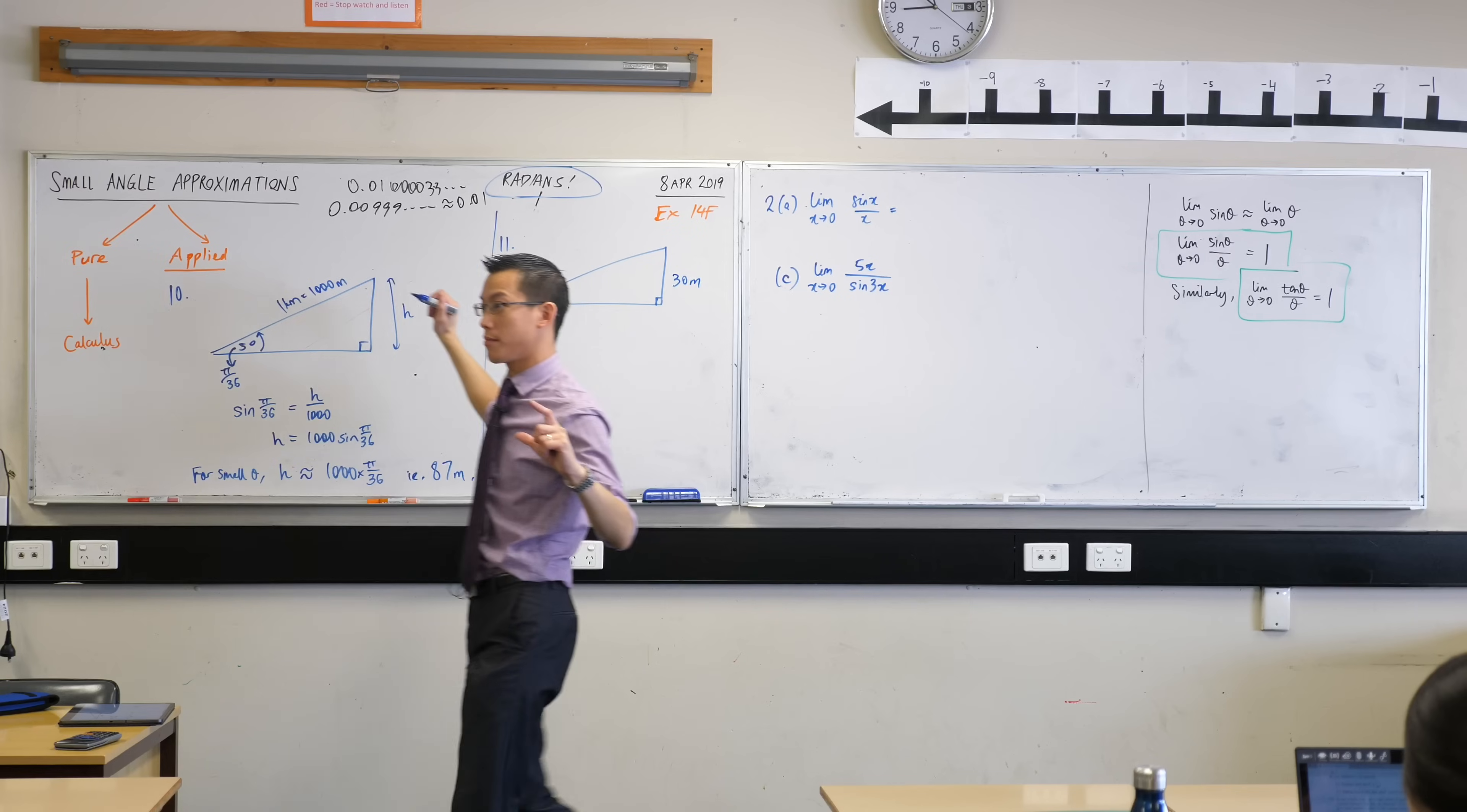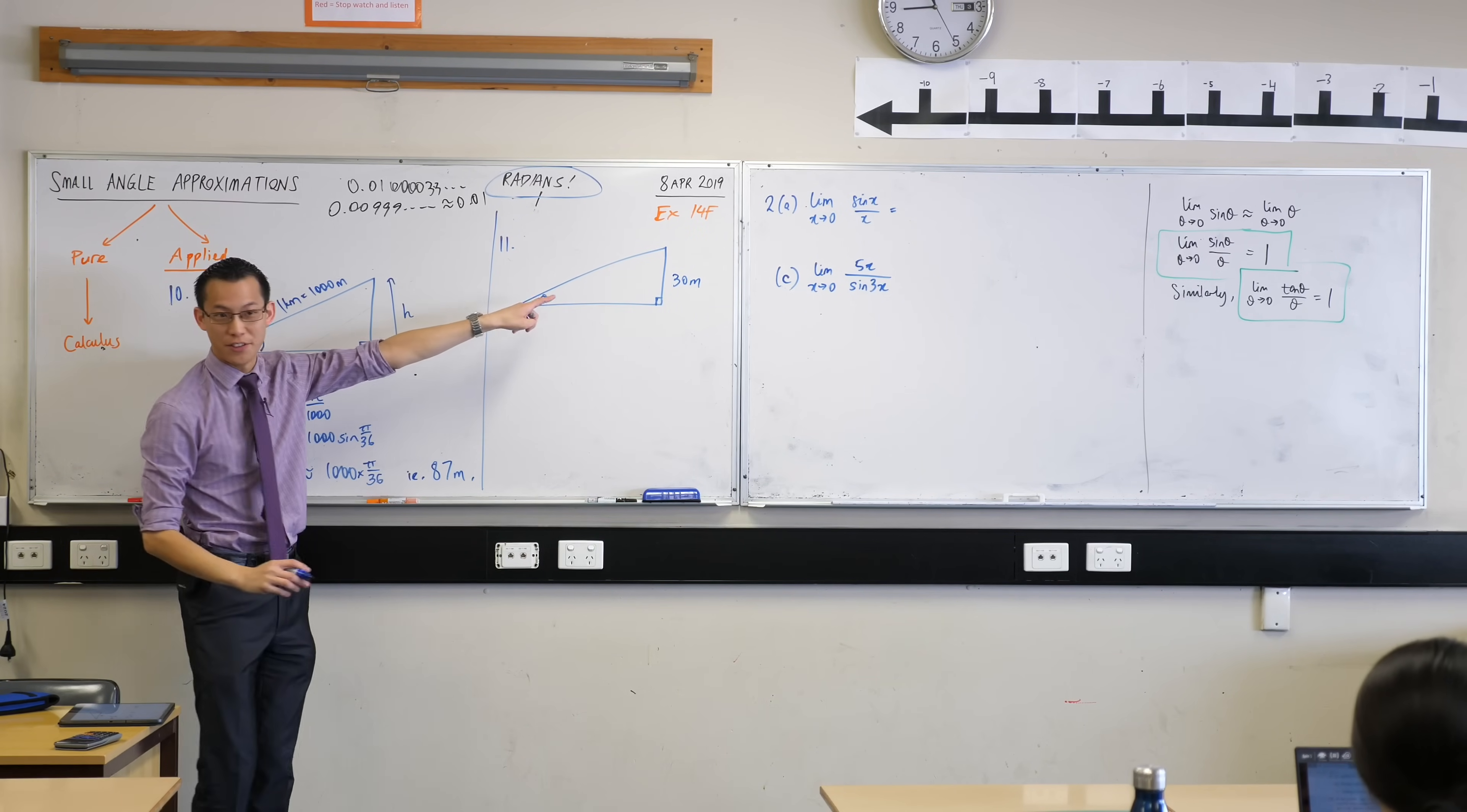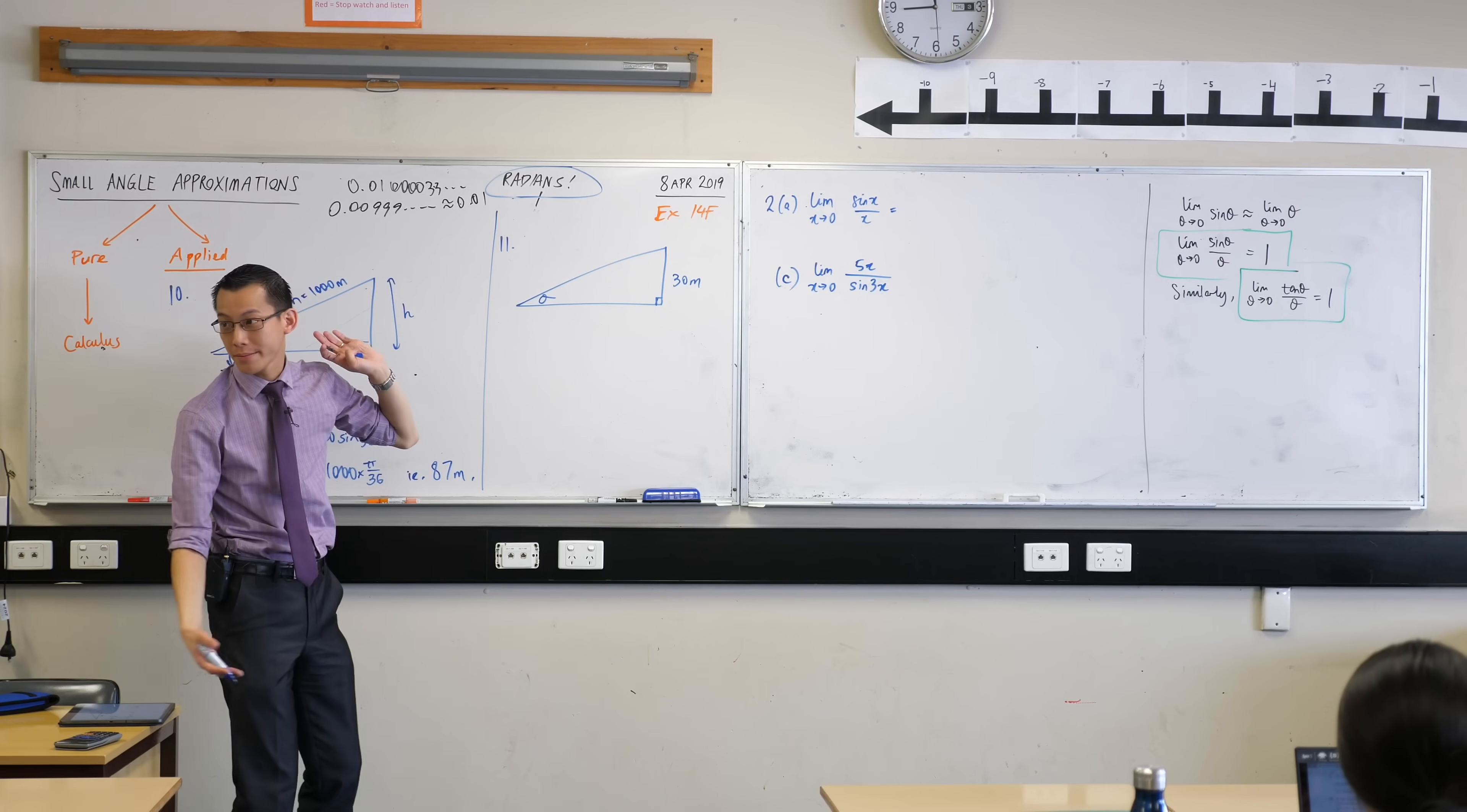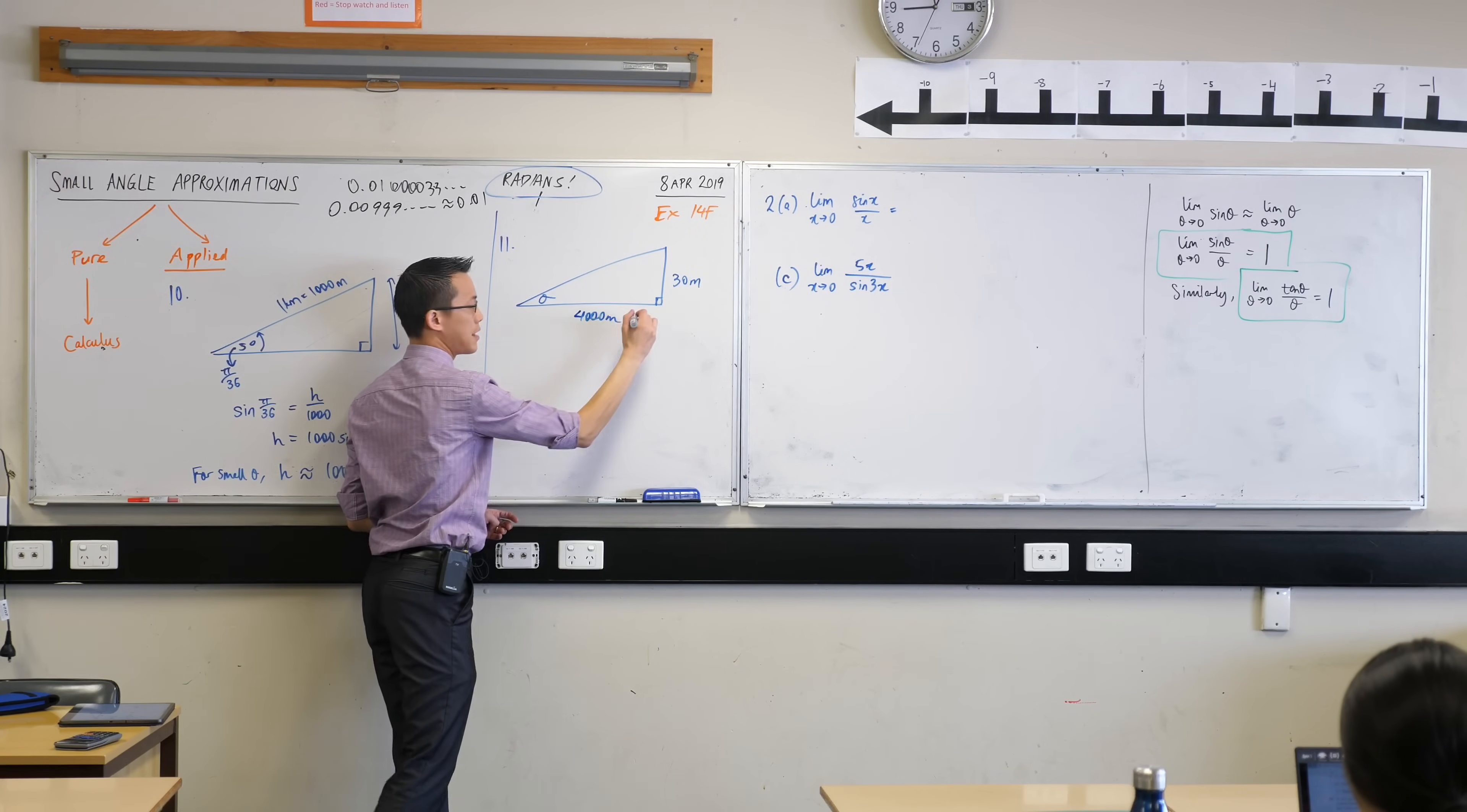What's the other length? 4 kilometers, but I'm not going to write down 4 kilometers because I've already locked myself into a unit of measurement here, so I'm going to write 4,000. Where am I going to put it? Across the bottom, it's that horizontal length, so 4,000 meters.